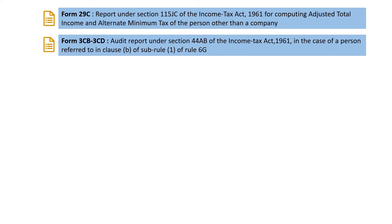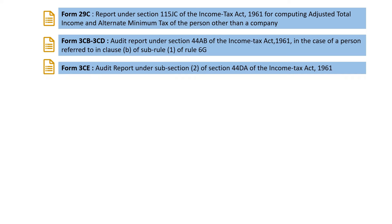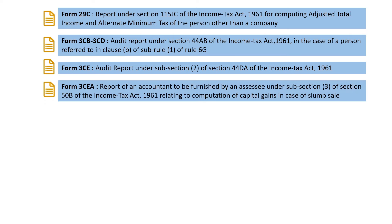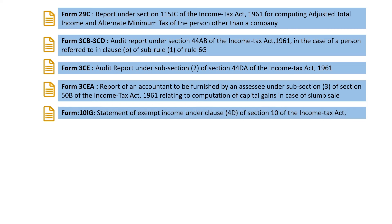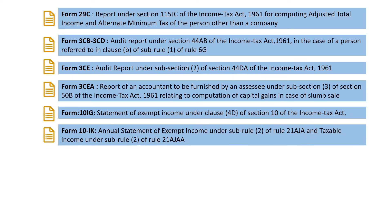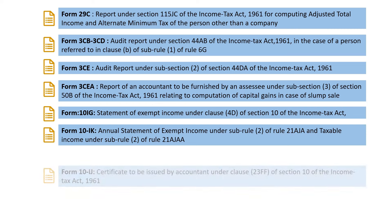Form 3CB and 3CD is an audit report under section 44AB of the Income Tax Act in case of a person referred to in clause B of sub-rule 1 of rule 6G. Form 3CE is an audit report under subsection 2 of section 44DA of the Income Tax Act. Form 3CEA is a report of an accountant to be furnished under subsection 3 of section 50B relating to computation of capital gains in case of slump sale. Form 10IG is a statement of exempt income under clause 4D of section 10. Form 10IK is an annual taxable statement of exempt income under sub-rule 2 of rule 21AJA and taxable income under sub-rule 2 of rule 21AJAA.